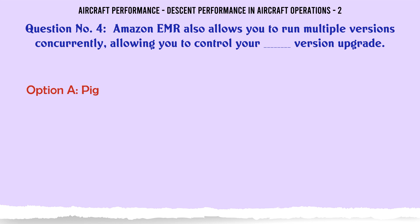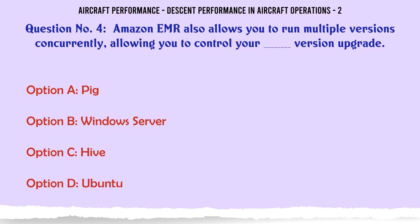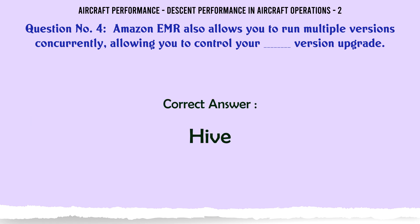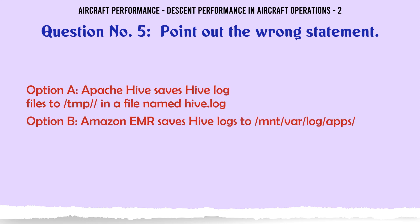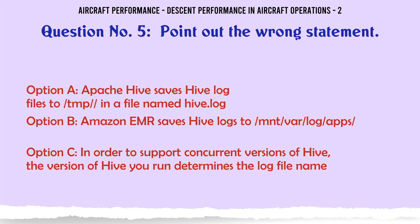Amazon EMR also allows you to run multiple versions concurrently, allowing you to control your version upgrade. a) API Gateway, b) Windows Server, c) Hive, d) Ubuntu. The correct answer is Hive.